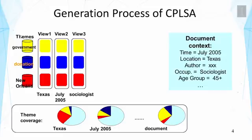On the right side, we assume the document has context information — the time is known to be July 2005, location Texas, etc. Such context information is what we hope to model as well, so we're not going to just model the text. One idea here is to model the variations of topic content in different contexts, giving us different views of the word distributions. On the bottom, the theme coverage or topic coverage might also vary according to these contexts.